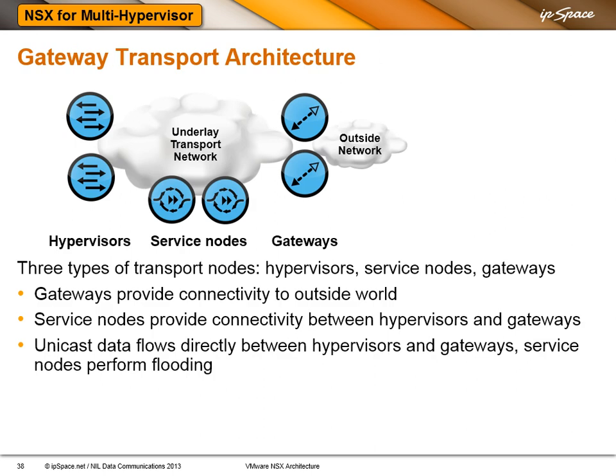NSX in multi-hypervisor environments solves the gateway challenge with a generic mechanism. You have the gateway nodes, you have the service nodes that help the gateway nodes, and then you have the hypervisors. Gateways provide connectivity between the overlay network and the physical world. The service nodes help between the hypervisors and gateways, primarily through the initial flooding phase when nodes are still discovering each other. Then the unicast data flows directly between the hypervisors and the gateways, so the service nodes are out of that — they only perform flooding.